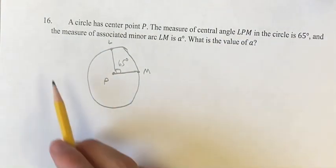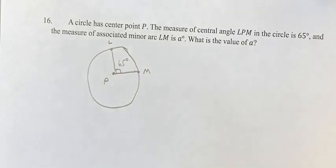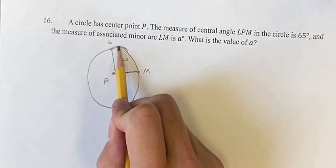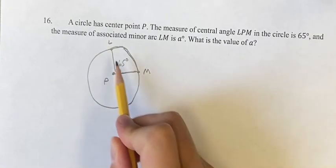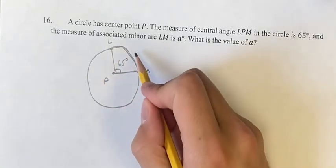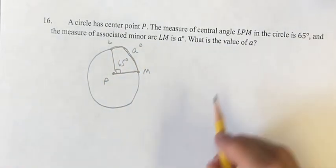And so we're saying, given that the measure of the associated minor arc LM - so that's the minor arc, this arc right here, not the other way around - is A degrees, what is the value of A?